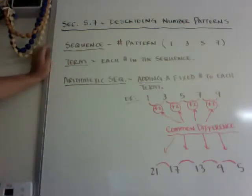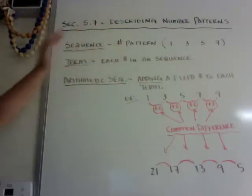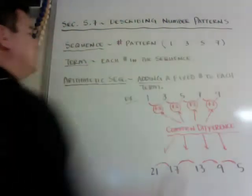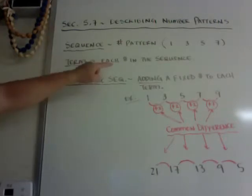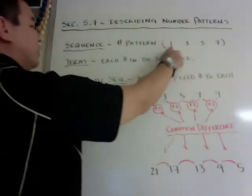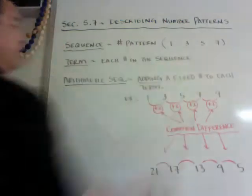Okay, the first thing is sequence. A sequence is a number pattern, or a pattern of numbers, such as 1, 3, 5, 7. That's a sequence. A term is each number in the sequence. So 1 is a term, 3 is a term, 5 is a term, 7 is a term.